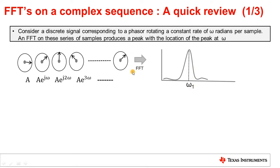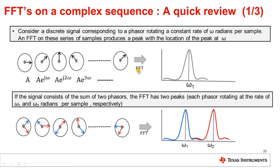FFT is just an efficient algorithm for computing this discrete Fourier transform. Now, if this discrete sequence consisted of two phasors instead of one, where you have the blue phasor rotating at a discrete angular frequency of omega 1 and the red phasor rotating at a discrete angular frequency of omega 2, the Fourier transform of this discrete sequence would actually have two peaks at discrete frequencies of omega 1 and omega 2 respectively.